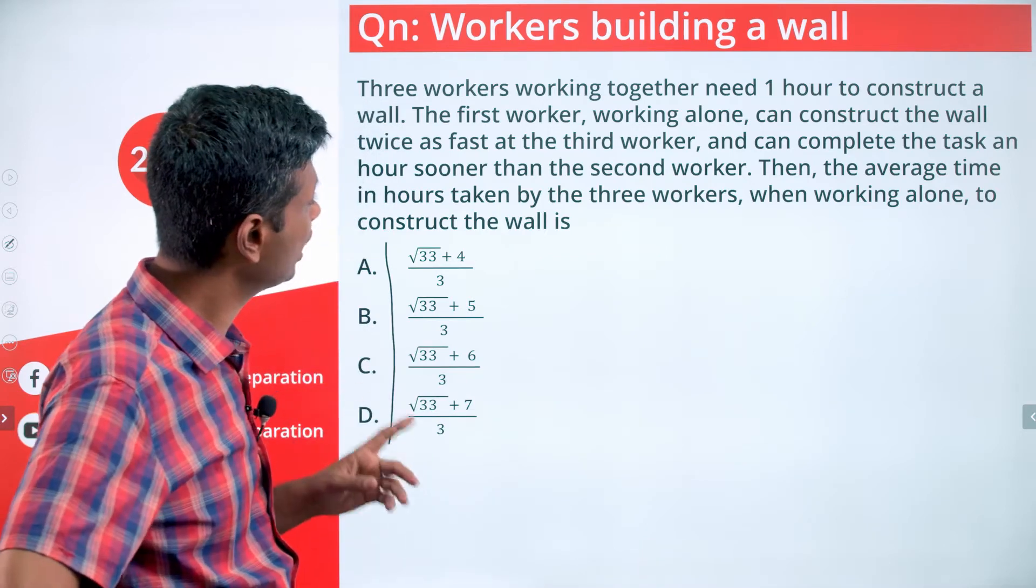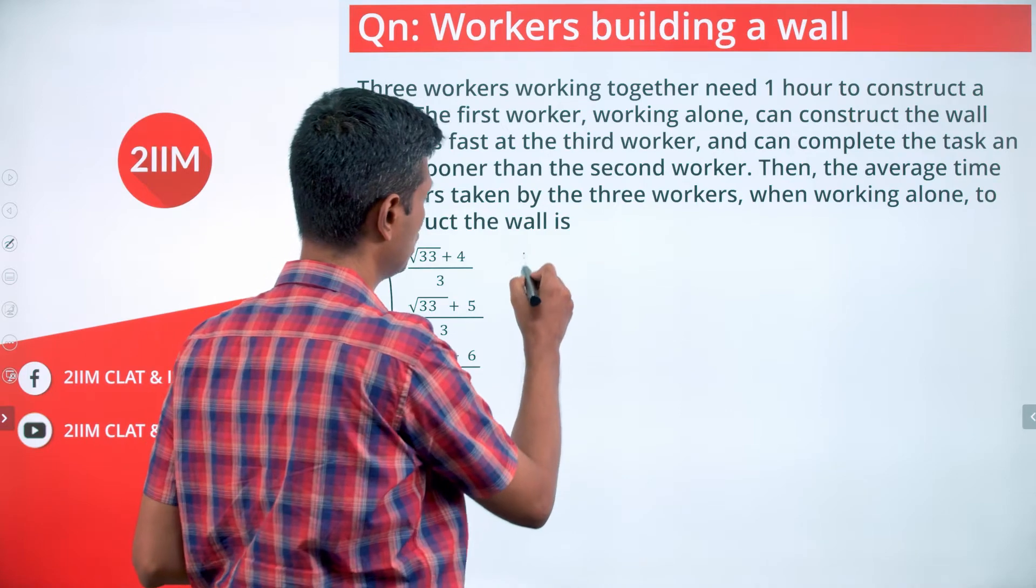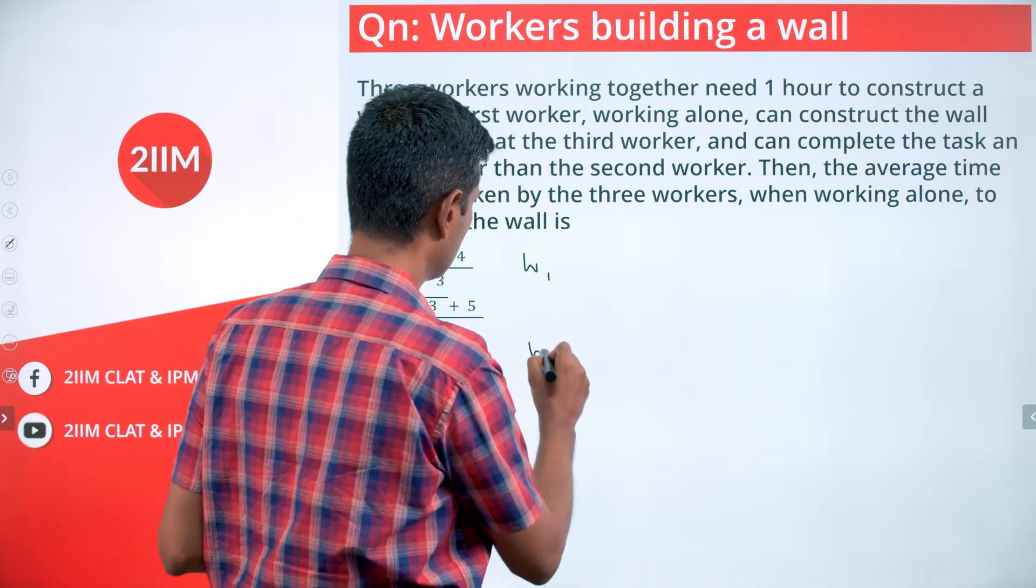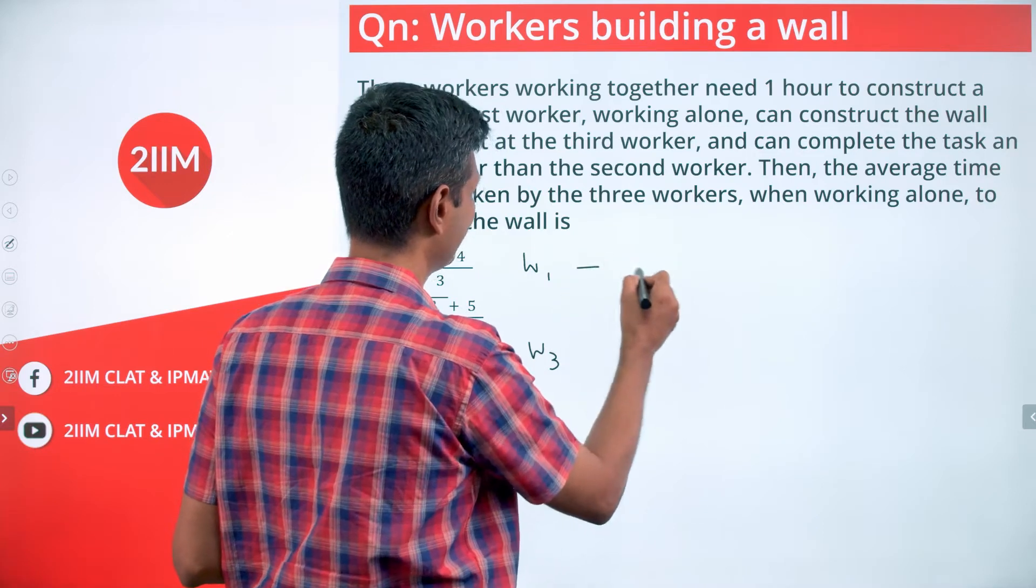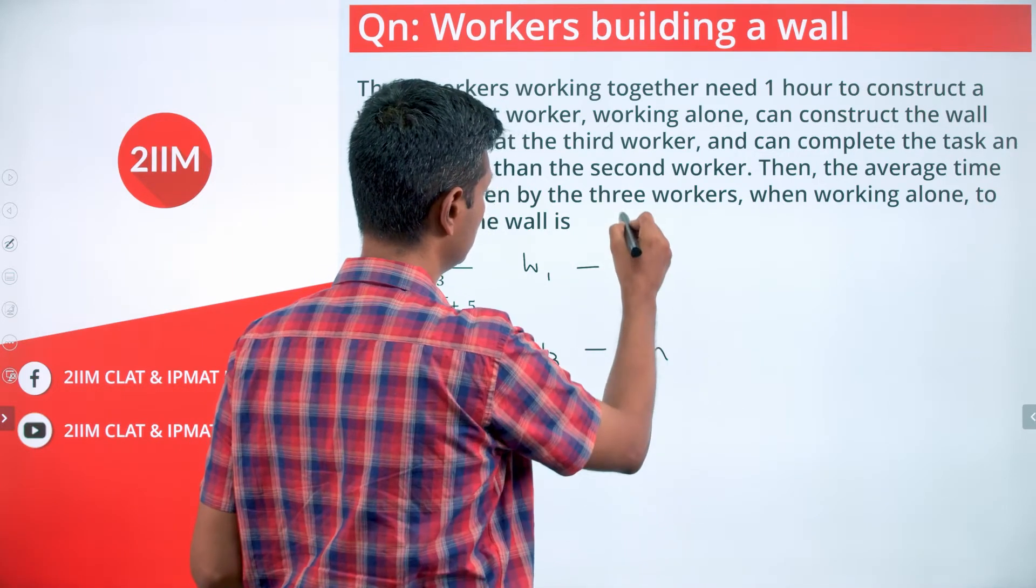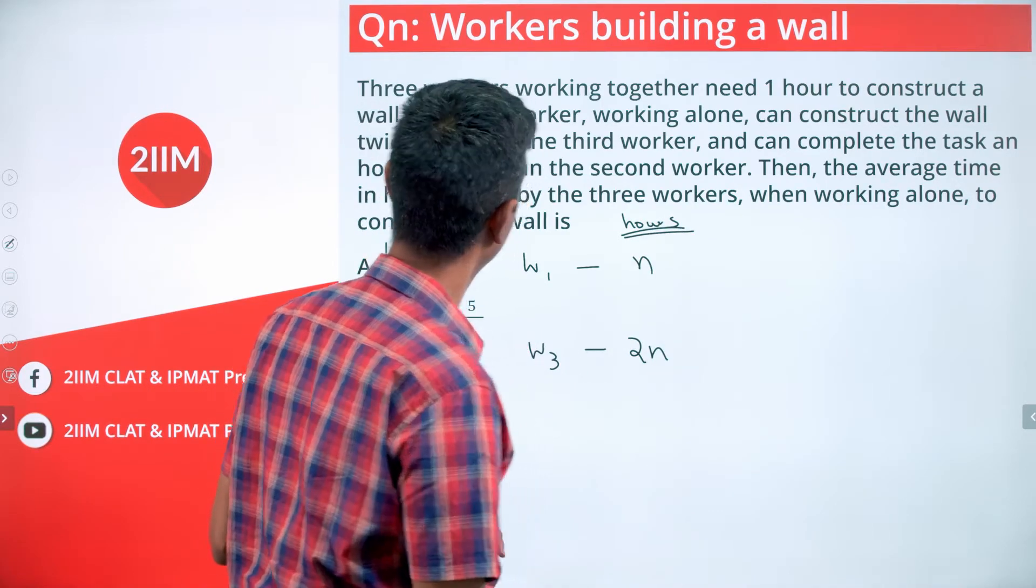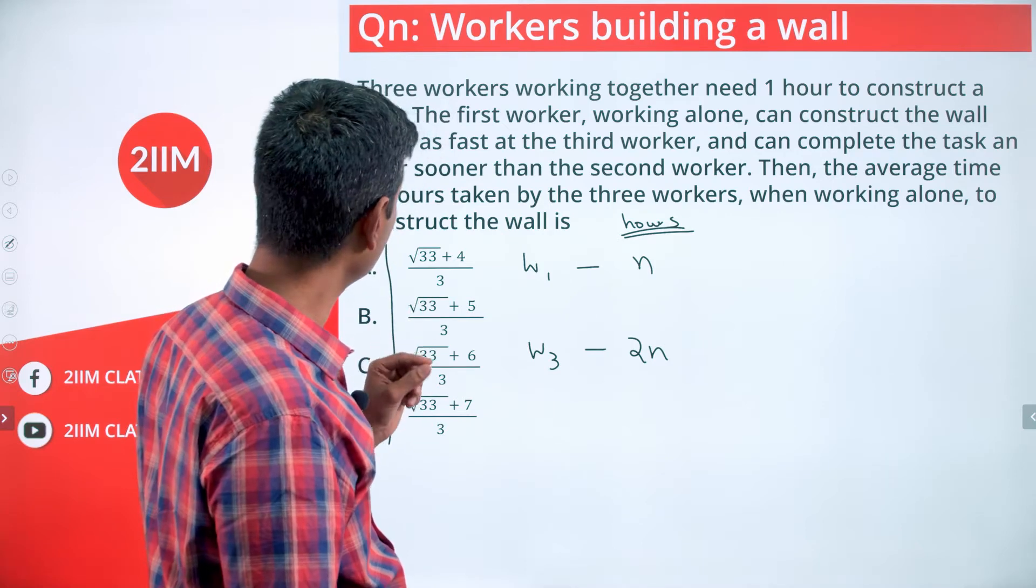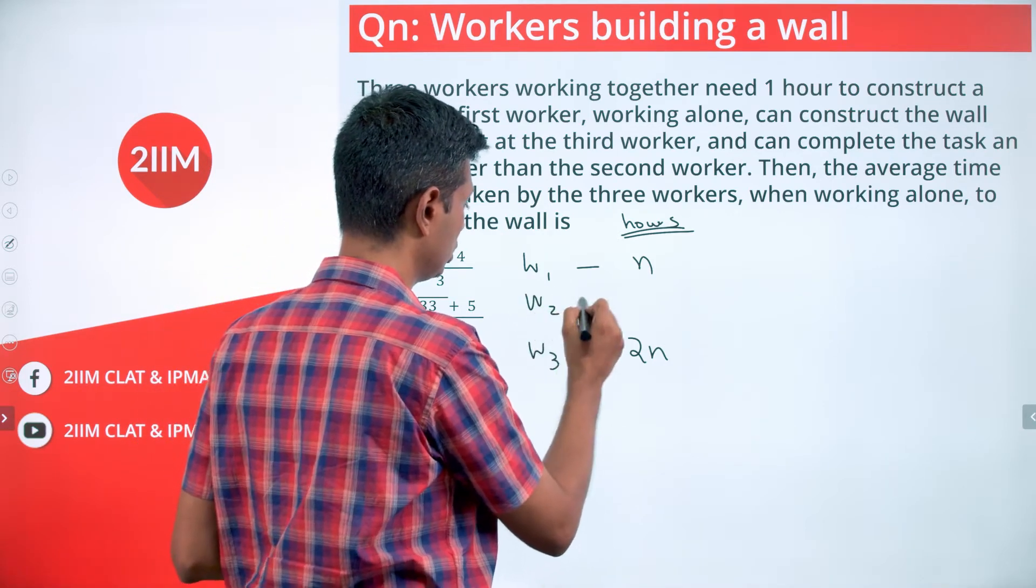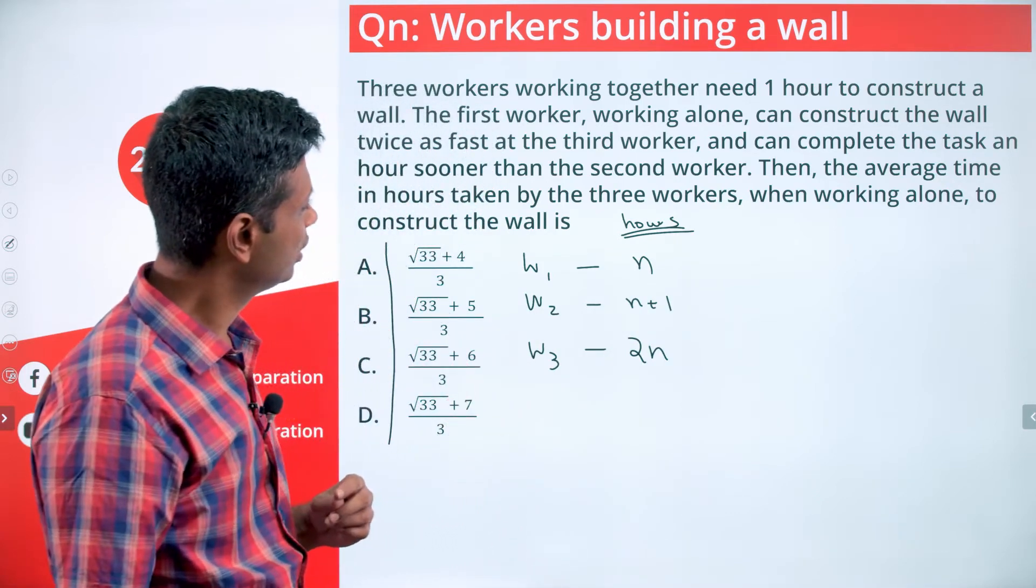The first worker working alone can construct a wall twice as fast as the third worker. So worker one is twice as quick as the third worker. I am going to say worker one completes it in n hours. Worker three will take 2n hours. And worker one can complete the task an hour sooner than the second worker. Worker two takes n+1 hours.